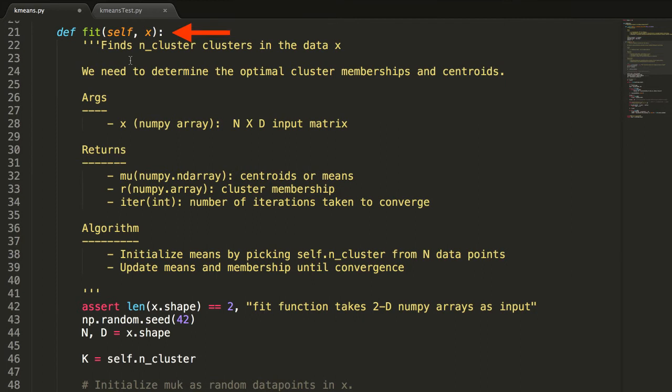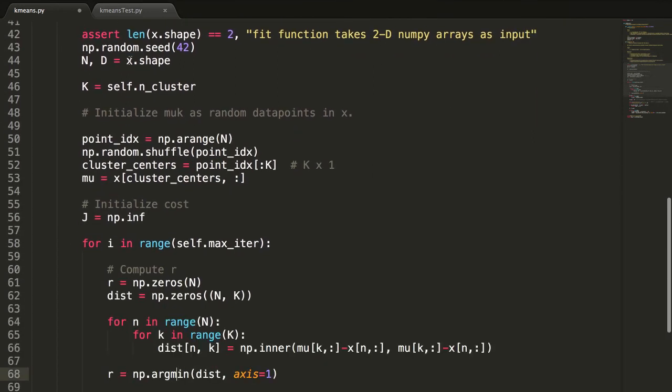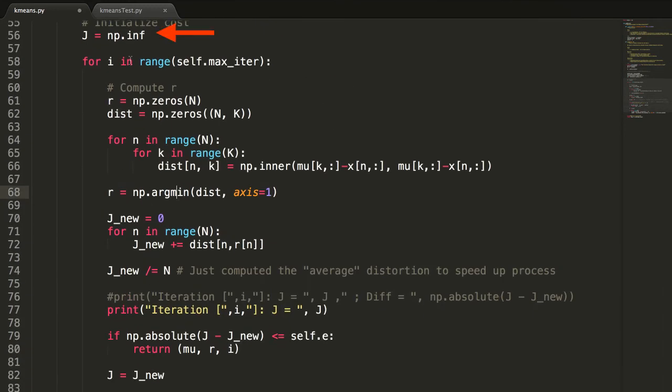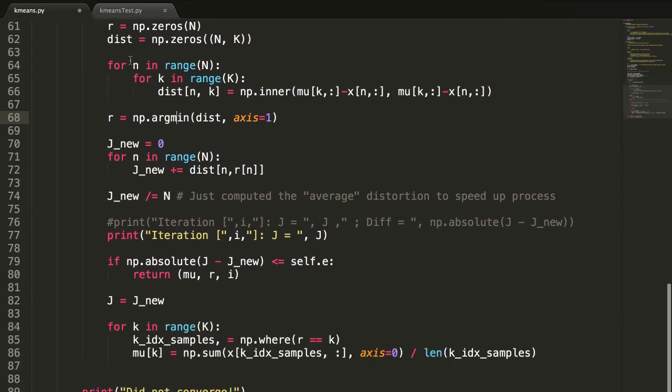Next, define the fit function which does the heavy lifting. It takes the n cross d input matrix as an argument. Now, just follow the exact steps we described in the k-means algorithm. Initialize mu k as random samples. Initialize distortion j to infinity. Compute the cluster membership r. Compute the difference between current and previous values of distortion j. If it is less than the tolerance, then the algorithm is converged. Otherwise, update the cluster centers and continue. And we're done here.